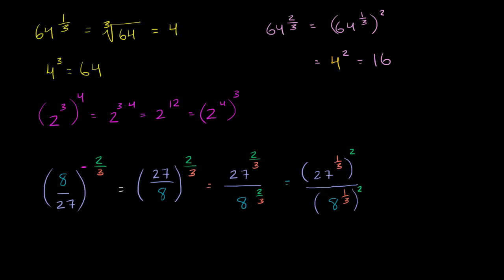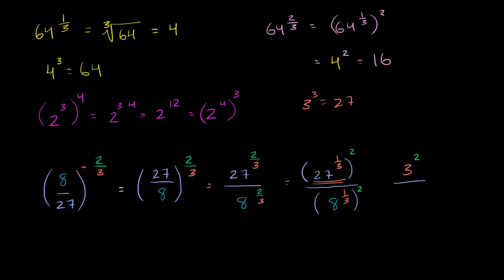What is 27 to the 1/3 power? It's the cube root of 27 — a number times itself three times equaling 27. That's 3, since 3 to the 3rd is 27. So the numerator gives us 3 squared. In the denominator, 8 to the 1/3 — since 2 times 2 times 2 is 8 — equals 2, and then we square that. So we get 3 squared over 2 squared, which is 9 over 4. If you break it down step by step, it's not too daunting.